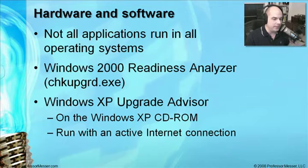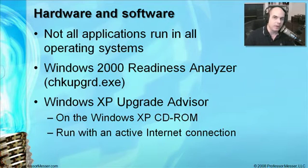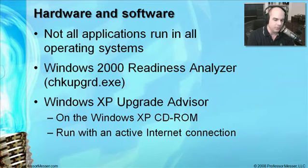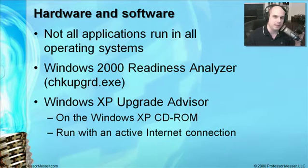There's also a version for Windows XP called the Windows XP Upgrade Advisor, which is on the Windows XP CD-ROM. It's useful to have an active internet connection while running it because it checks for updates — since hardware and software are constantly being added to the Upgrade Advisor database, it checks online for the latest version. Before upgrading to Windows 2000 or Windows XP, run these advisors. If everything comes back clean you can feel comfortable proceeding, but if it flags an incompatible printer, check with the manufacturer for an updated driver.